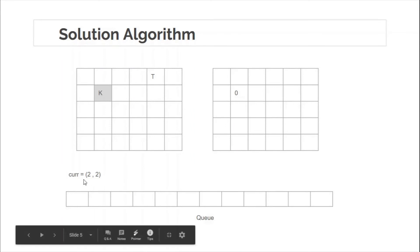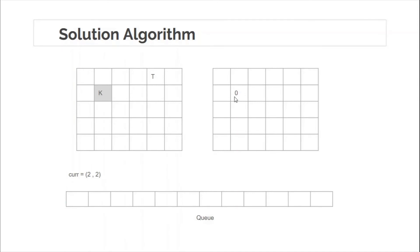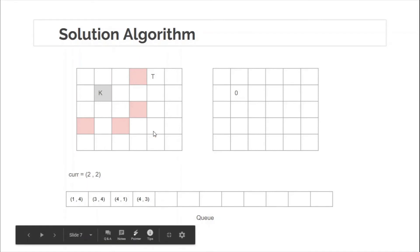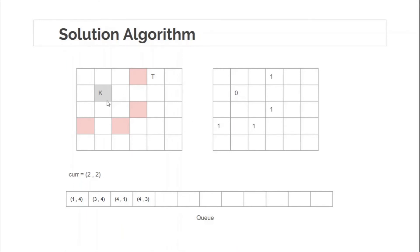After removing the current node (2,2), all cells reachable from it in one knight move will have distance one greater than the current node's distance of zero, so distance one. From this cell there are four reachable cells. All four are inserted into the queue and marked as visited with distance one, since you can reach any of them in one move from the source.